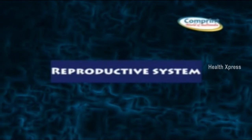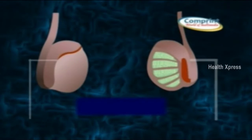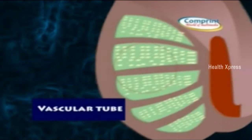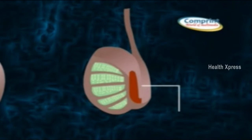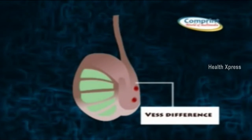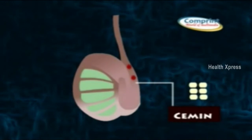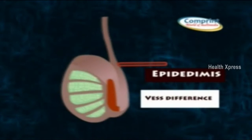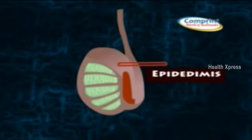Testes are oval in shape. In this system, the vas deferens, which is a vascular tube, transports the sperm-containing fluid called semen. The epididymis is a set of coiled tubes. The seminal vesicles and prostate glands provide fluid which lubricates the ducts and nourishes the sperm. These seminal vesicles attach to the vas deferens at the side of the bladder.